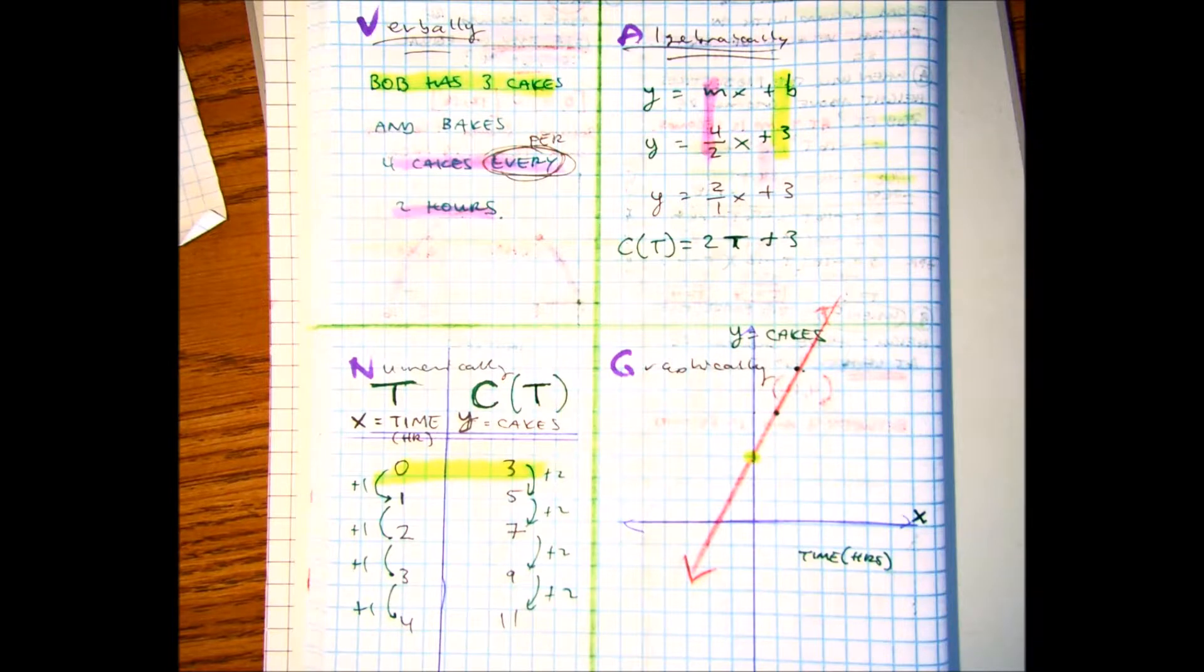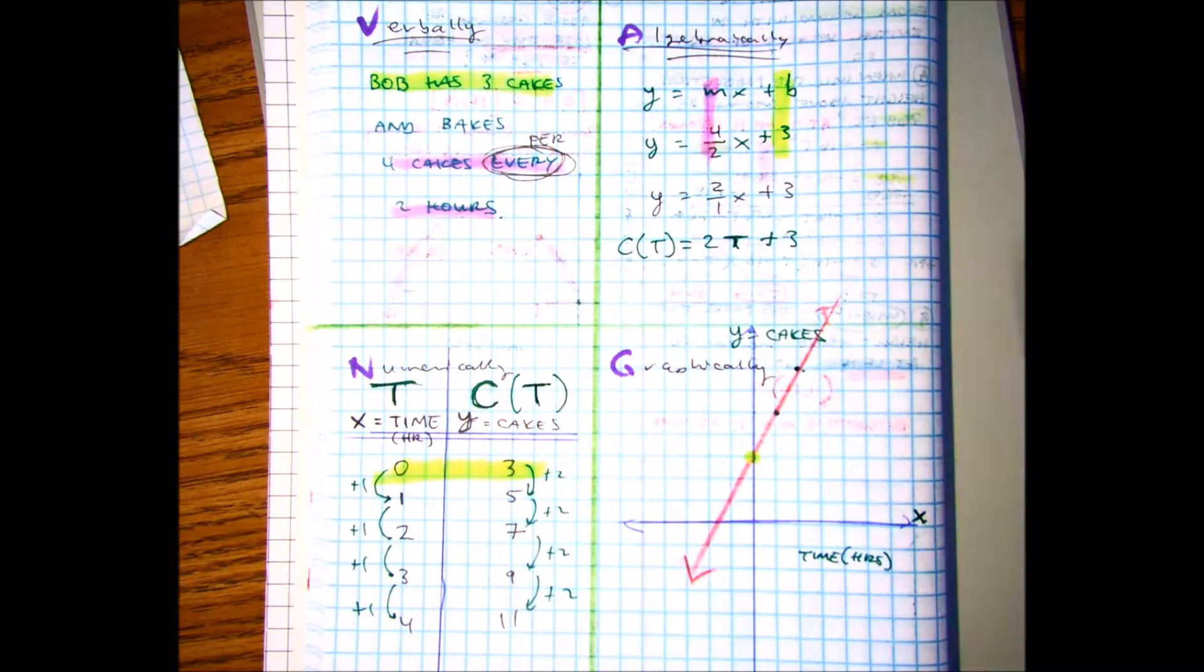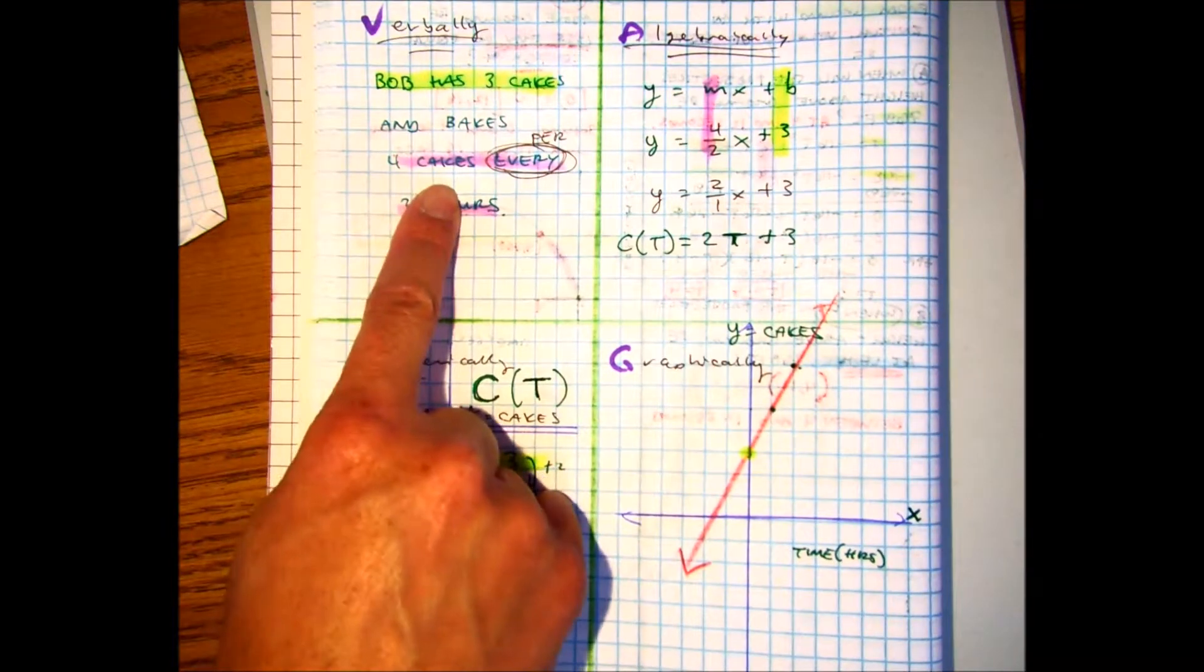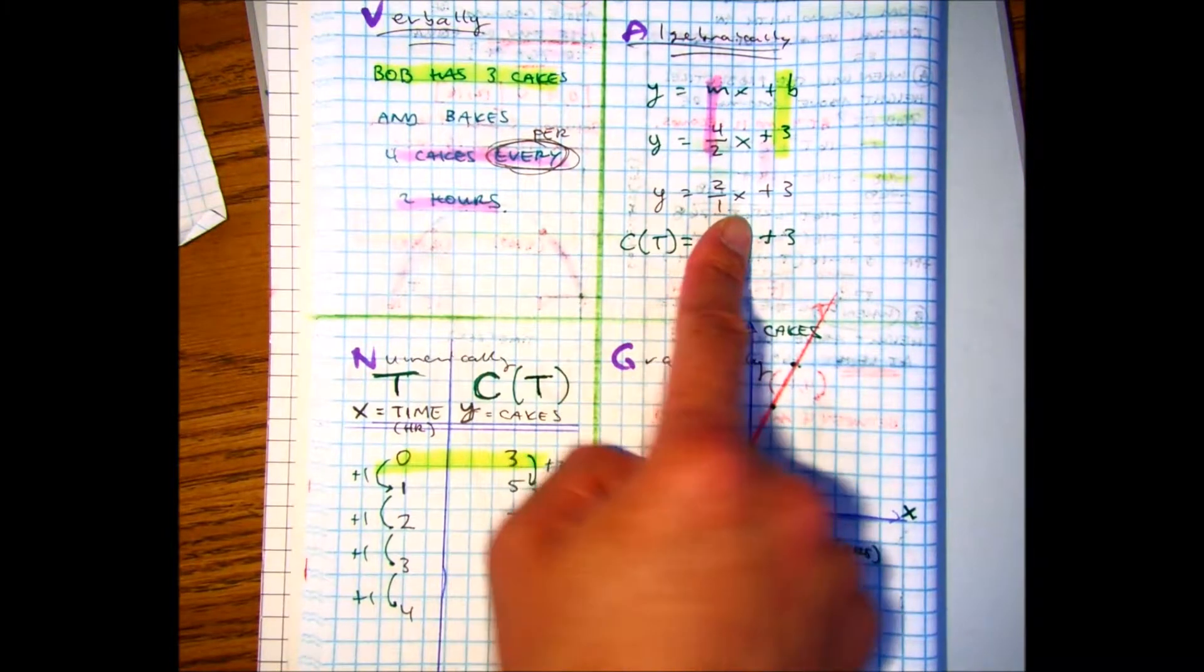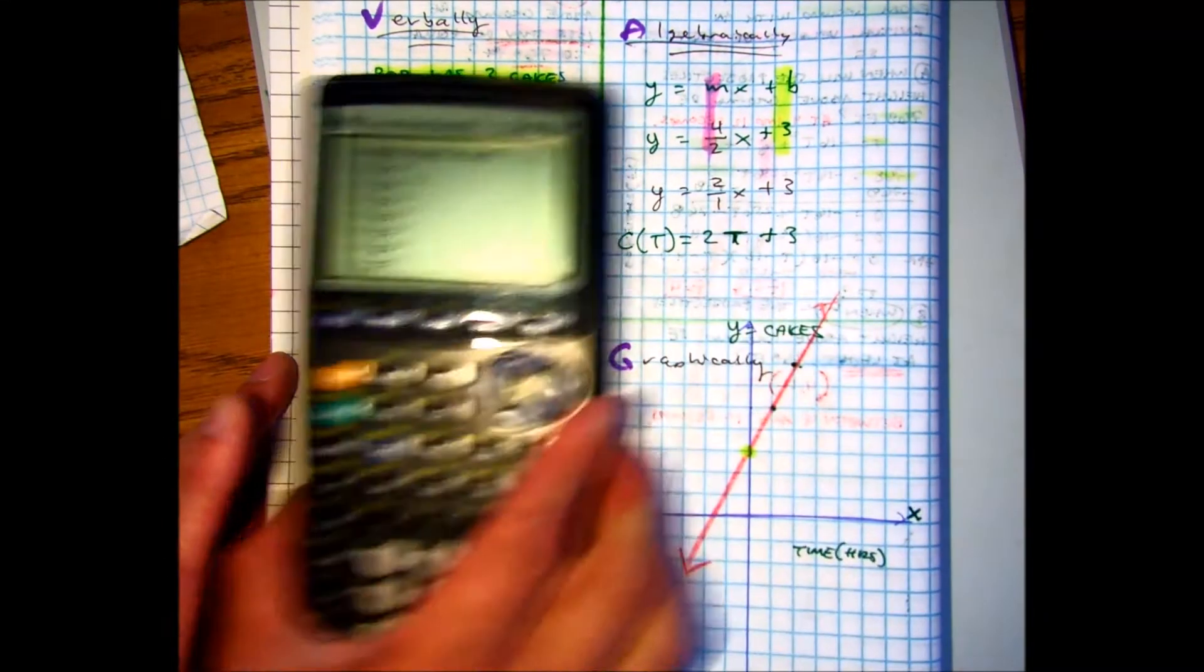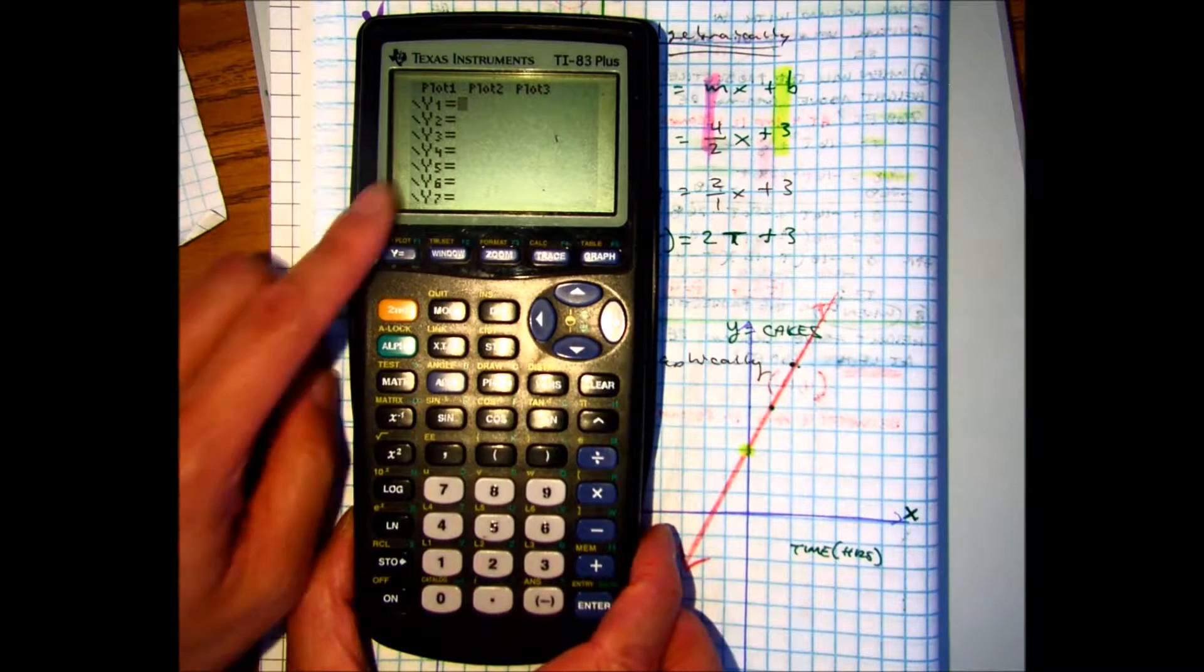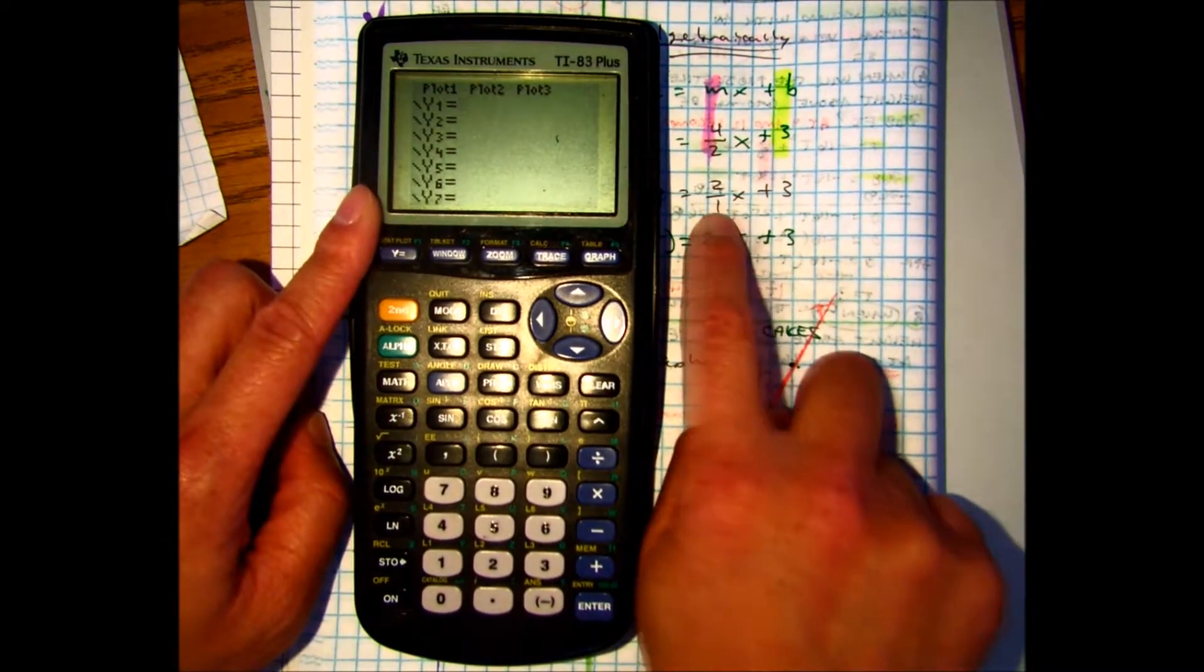How can we use our calculators? Well, if I take my calculator, from the verbal, I have an equation, and we can put that into our graphing calculator. So under y equals, we can put in 2x plus three.